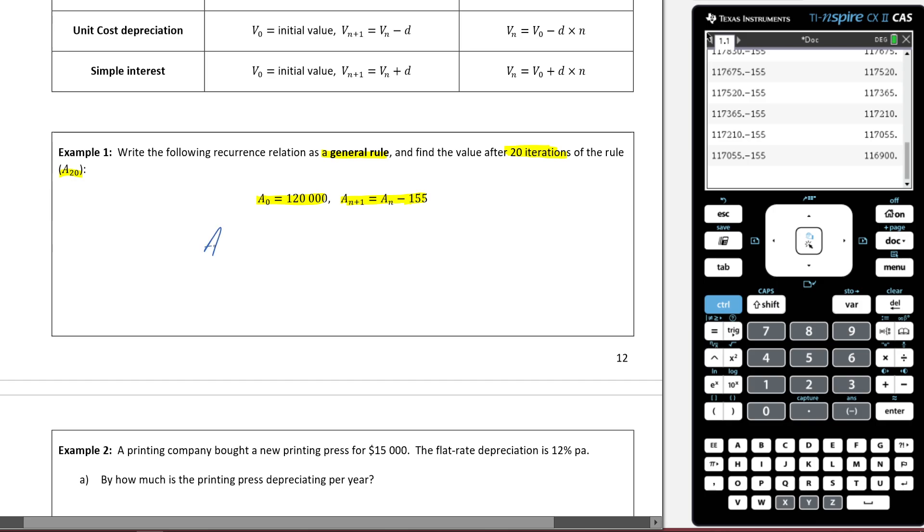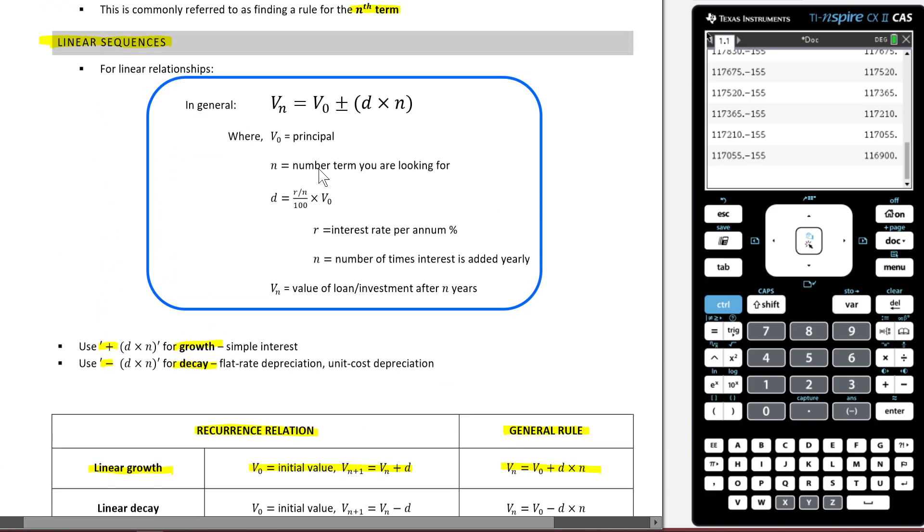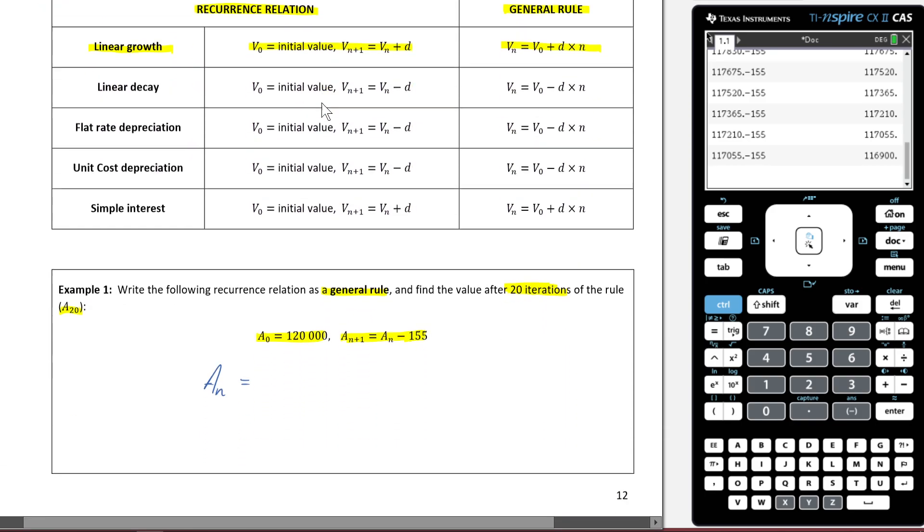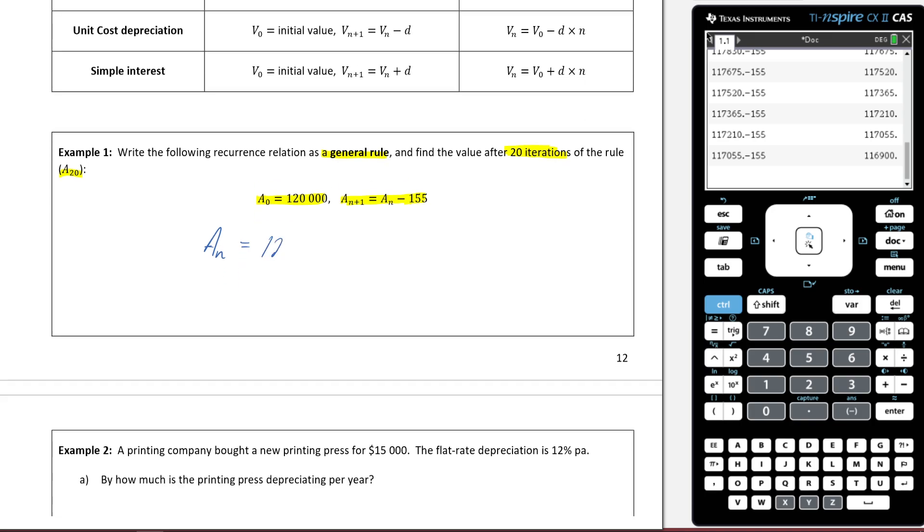So we say A_n to start off our general rule, A_n. It's going to be equal to, as our rule tells up here at the beginning, our principal amount. So 120,000, that's our starting amount. And then I want to subtract 155, and then I'm going to times this by n. So hopefully you can see what we're doing here. We're saying we're starting with this much, and we're going to subtract 155 n times. Now we can sub whatever number we want into n.